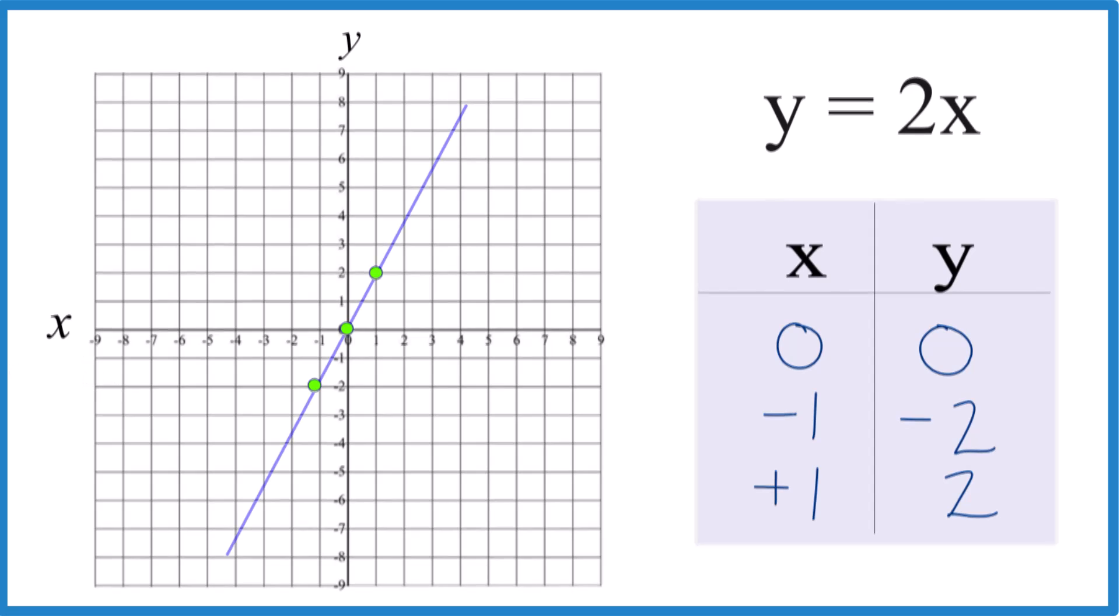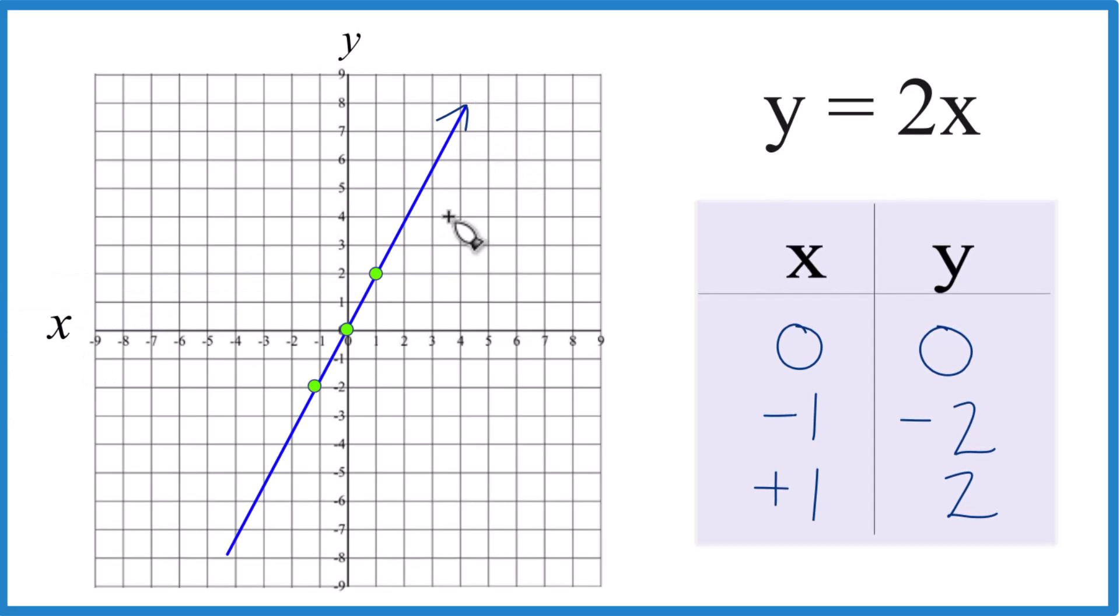Let me put a line through this. We'll put arrows here, show that it goes to infinity. And that's the graph for the line y equals 2x using a table of values.